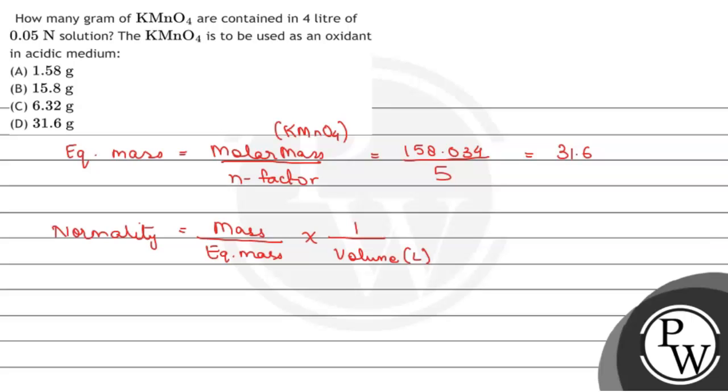So we have to insert values. Normality is 0.05 equals mass which we have to calculate divided by equivalent mass which is 31.6 into volume which is 4. This gives mass equals 0.05 into 31.6 into 4. Calculating this, we get the value 6.32 grams. The value of mass is 6.32 grams.